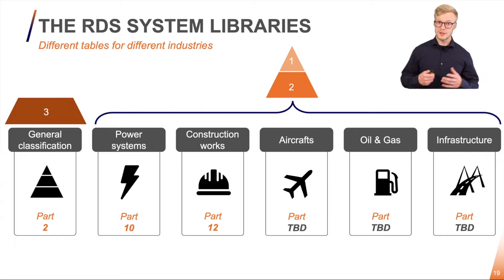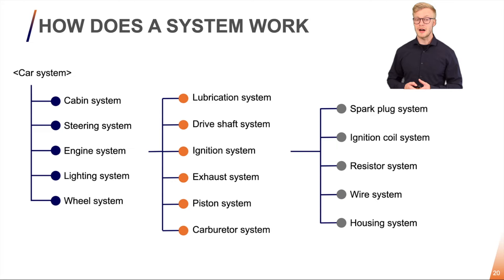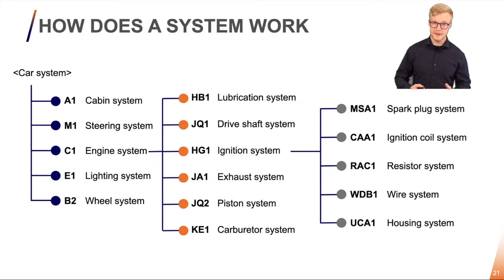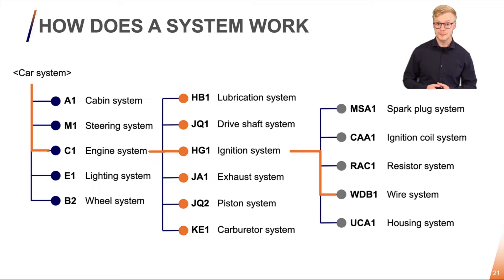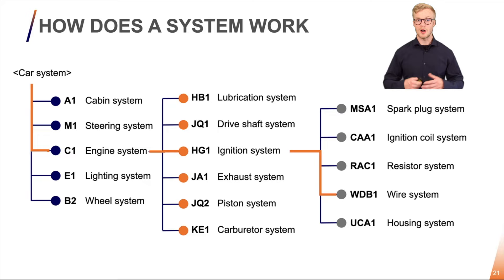Now that we know that the world consists of systems and each system can be classified, let's try to see how that looks in our structure. Now every system has gotten its own letter code and a number, which makes them unambiguous. And if we now take a look at the same road in our tree structure, we find that the road to our wire system — our WDB1 — is unique. So it creates an unambiguous full reference designation for our component system.